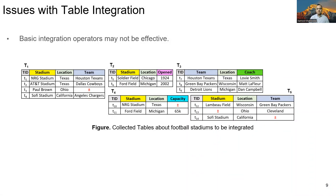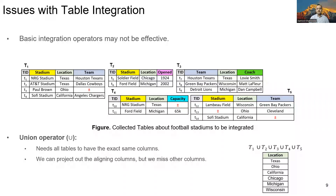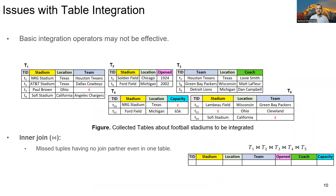Furthermore, even if we resolve the column headers and figure out which columns to align together, the second issue is that we still need an integration operator to integrate the tables together, and the basic operators may not be effective for our problem. For instance, the basic union operator needs all the tables to have exactly the same columns. An alternative would be to project out the matching columns and integrate the remaining ones, but doing so we again miss information. For example, we will be left only with the location column after applying the union operator with projection. Similarly, the natural inner join operator also misses integrating tuples even if the joining tuple is absent in just one table. For example, if we inner join all five tables, we get no tuples in the result since none of the tuples have a joining partner in all the tables. This is a very common case in integration.